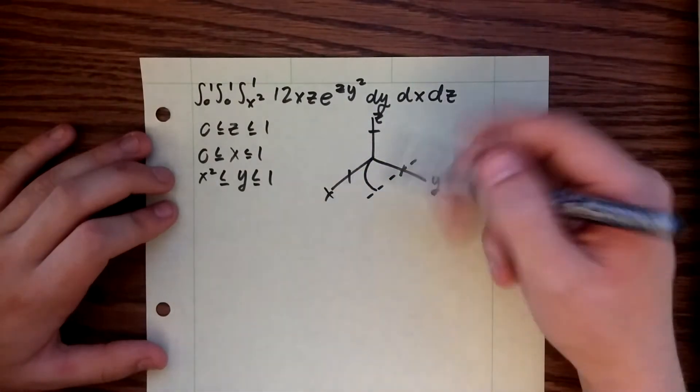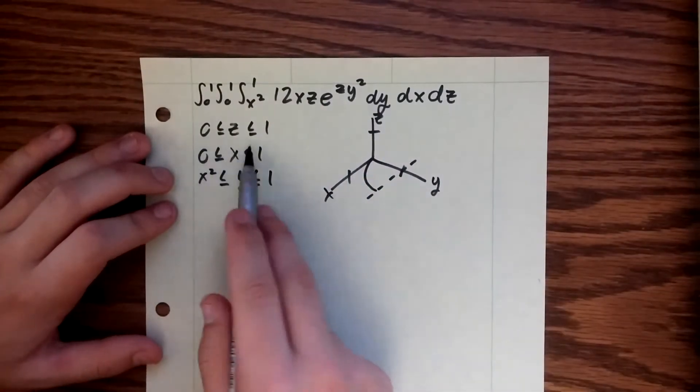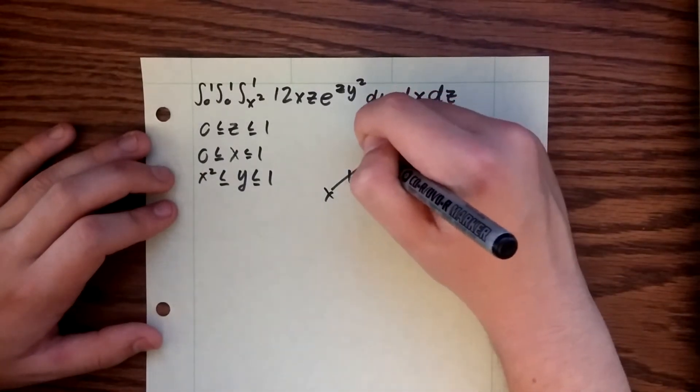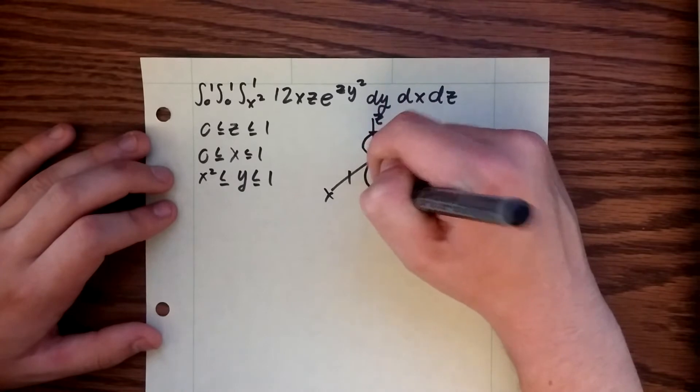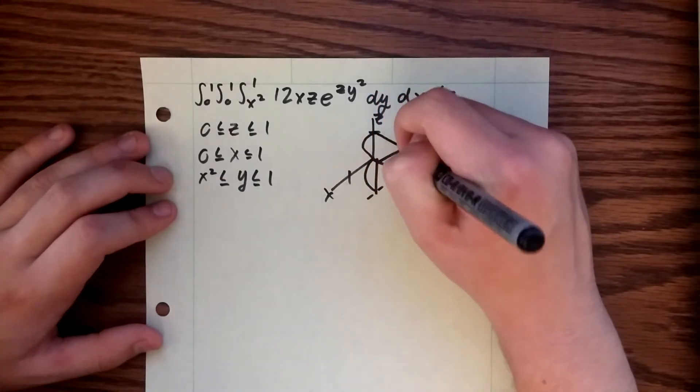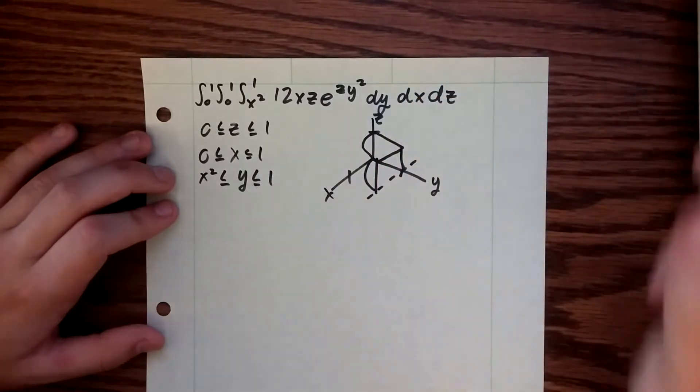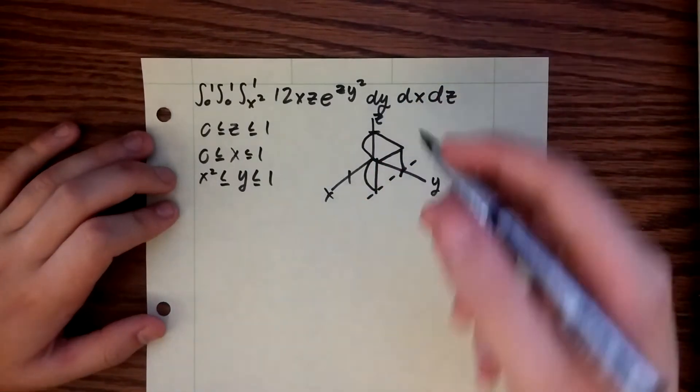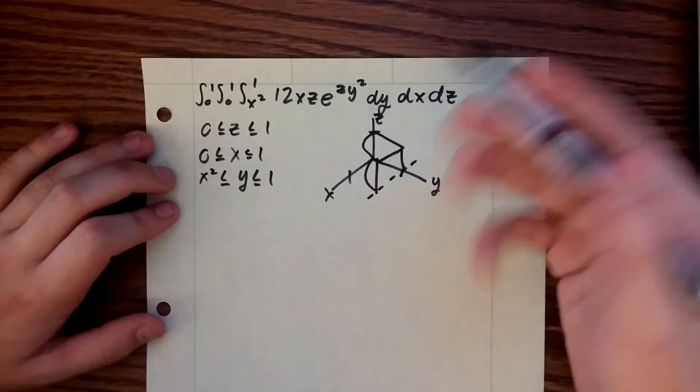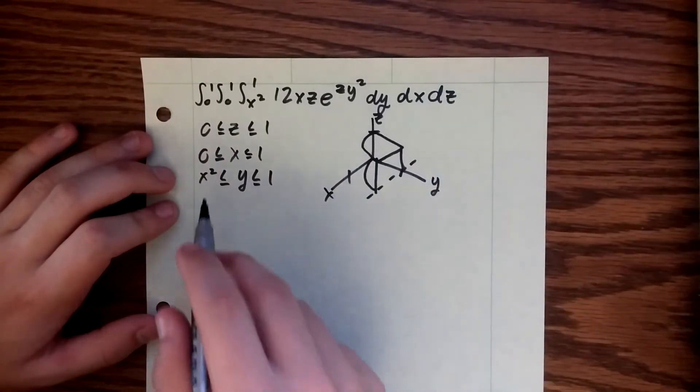This is our region in the xy plane. We see that z goes from 0 to 1, so for this problem we simply just extend this region upwards to get this nice little cheese wedge kind of shape. We're not really going to need this picture too much for this problem, but sometimes it makes it easier.